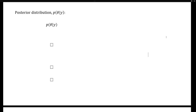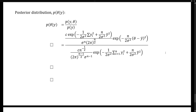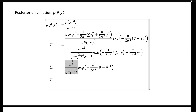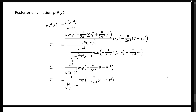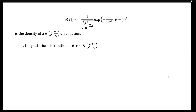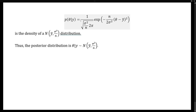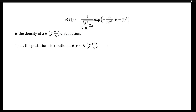The posterior distribution is the joint distribution of y and theta divided by the marginal density of y. If we substitute our previous derivations for the joint density and the marginal density of y, there's going to be a lot of cancellation. Simplifying further, we get the constant term, which further simplifies to the density of a normal y-bar, sigma squared over n distribution. Putting everything together, our posterior density has the following form, which is the density of a normal y-bar, sigma squared over n distribution. Thus, the posterior distribution for theta is normal with a mean of y-bar and a variance of sigma squared over n.